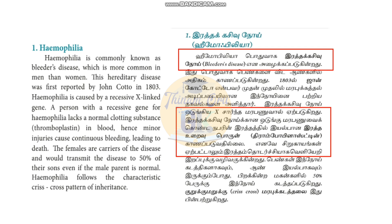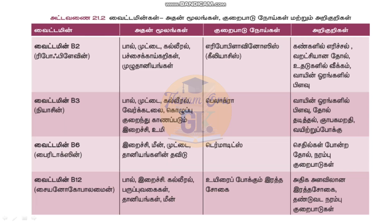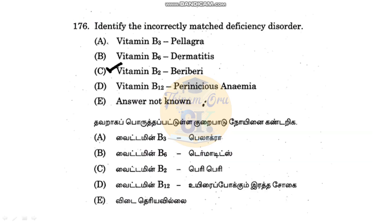This is sex-linked inheritance. Now for vitamin deficiency diseases: Vitamin B3 deficiency causes Pellagra. Vitamin B6 deficiency causes Dermatitis. Vitamin B2 deficiency causes Ariboflavinosis — not Beriberi. Beriberi is caused by Vitamin B1 deficiency. Vitamin B12 deficiency causes Pernicious anemia. So the correct option is C.